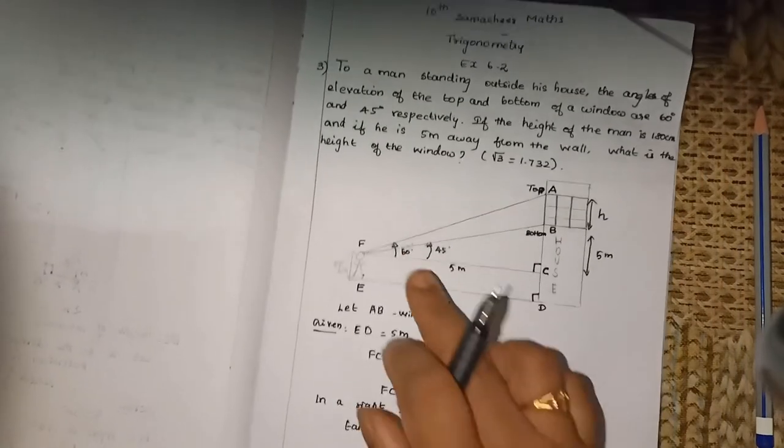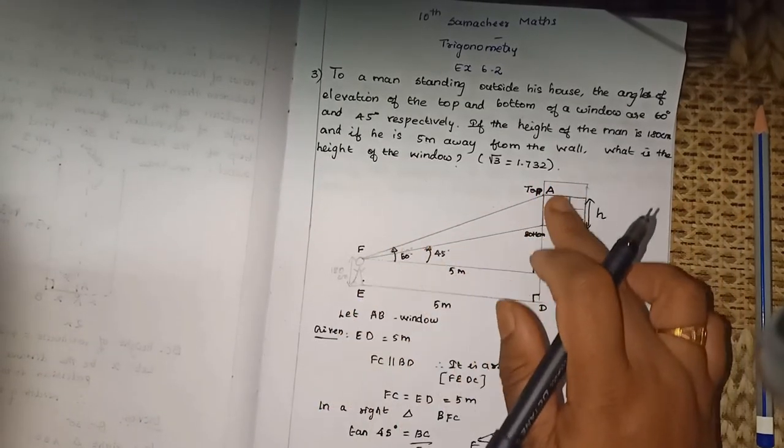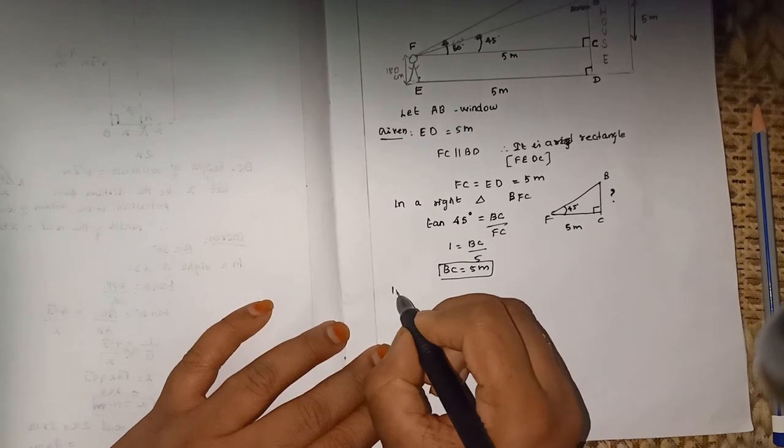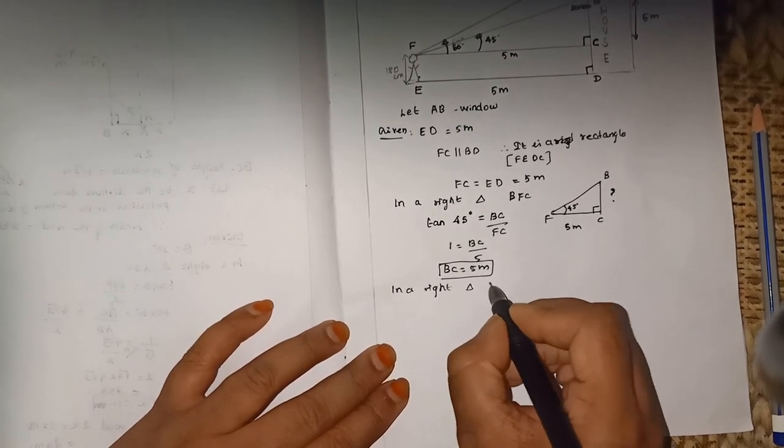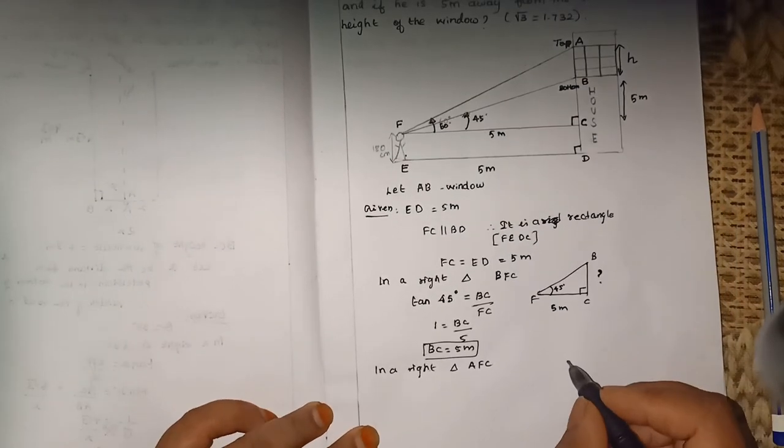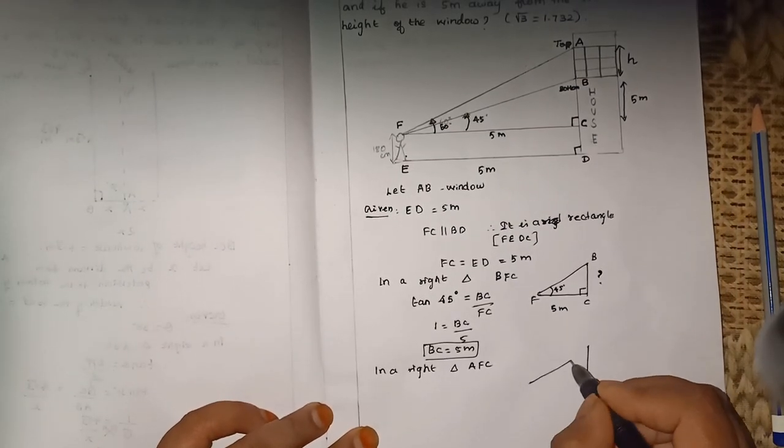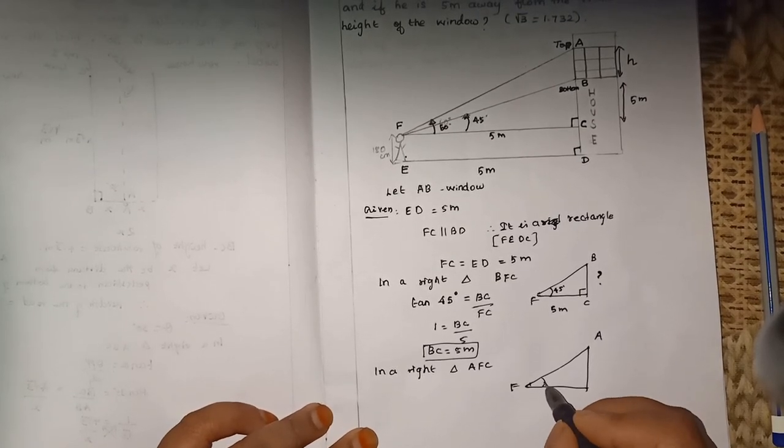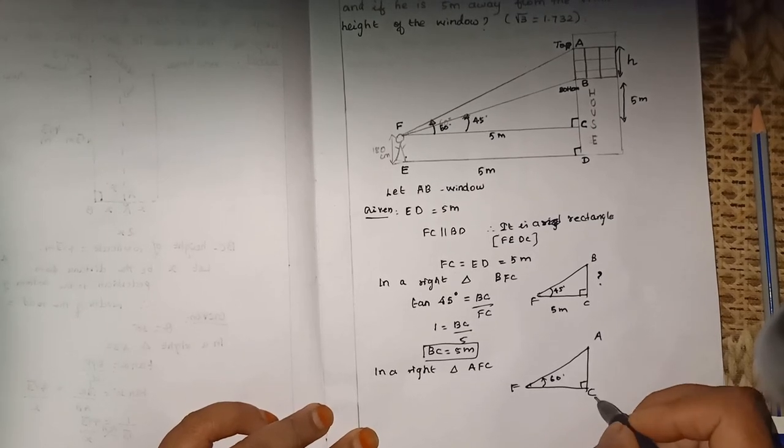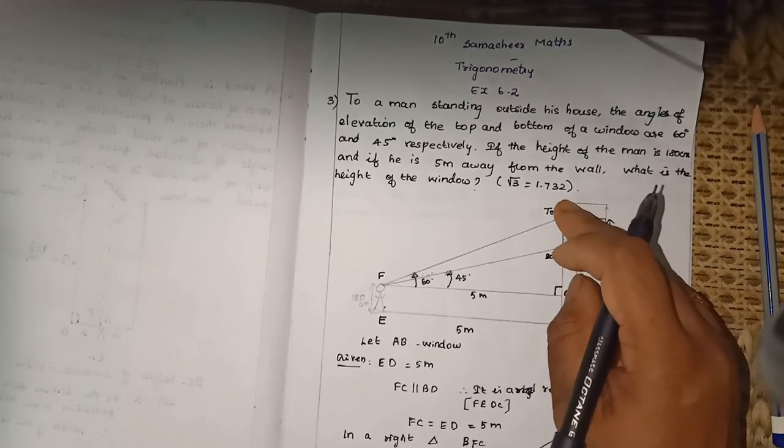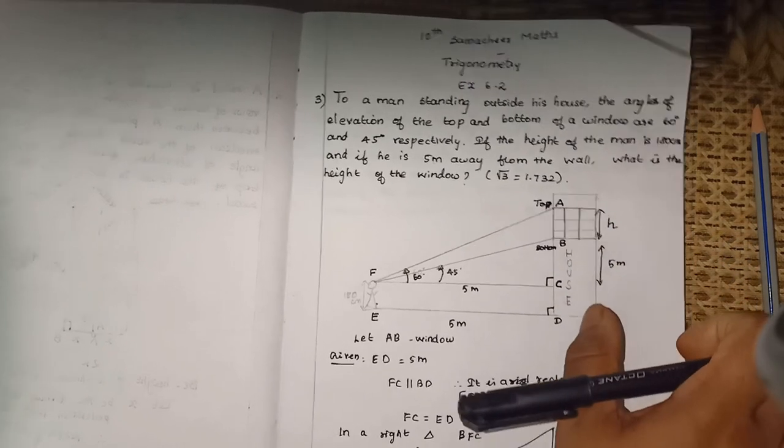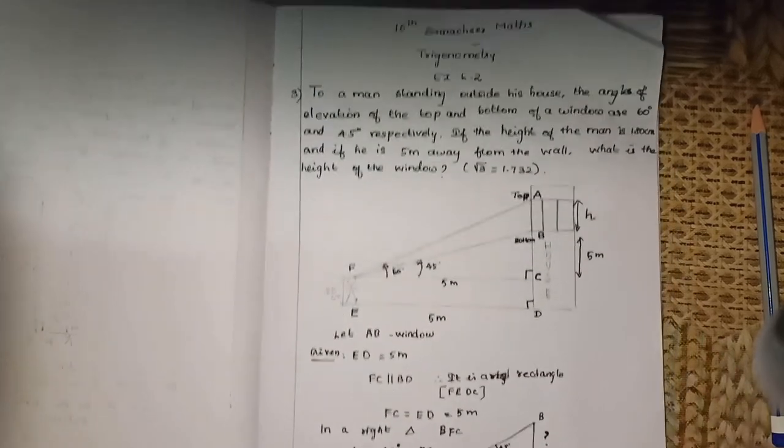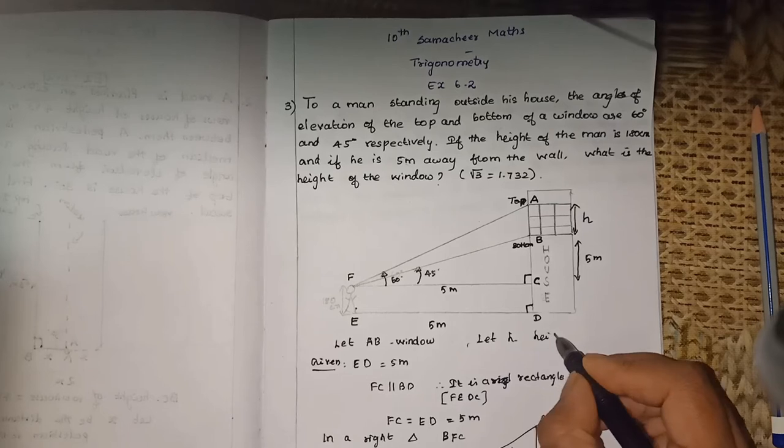We have another triangle, which is triangle AFC. In right triangle AFC, angle FAC is 60 degrees. AC is equal to - let H be the height of the window. So AB is equal to H. Therefore AC is H plus 5.